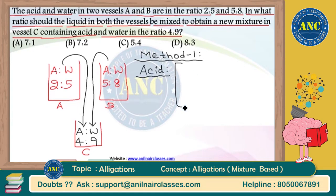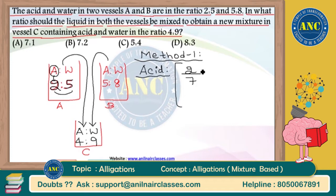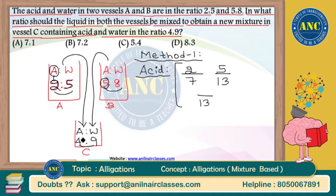In vessel A, 2 liters of acid and 5 liters of water are present, making 7 liters of solution total. Out of 7 liters, 2 liters belong to acid, so it is 2/7. In vessel B, out of 5+8=13 liters, 5 liters belong to acid, so it is 5/13. In vessel C, out of 4+9=13 liters, 4 liters belong to acid, giving 4/13.